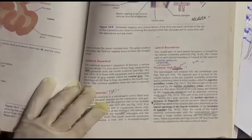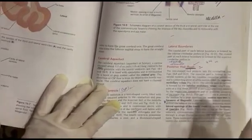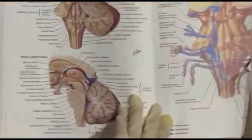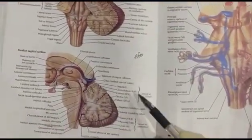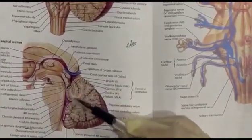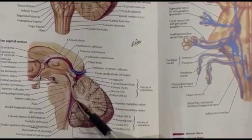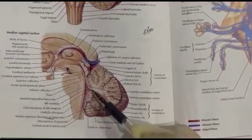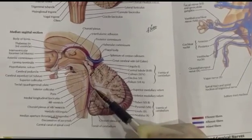Discussing the posterior wall of the 4th ventricle, also known as the roof: the posterior wall or roof of the 4th ventricle is formed superiorly by the superior medullary velum and inferiorly by the inferior medullary velum. The superior and inferior medullary vela are actually thin laminae of white matter.